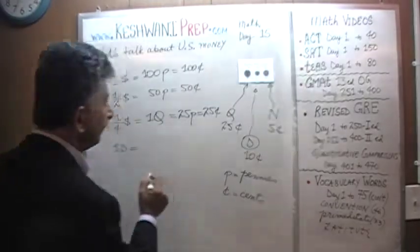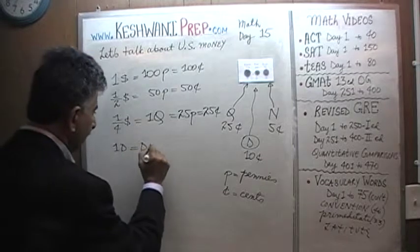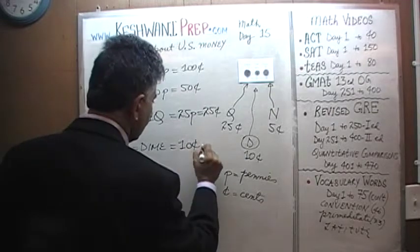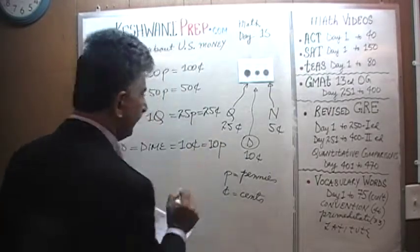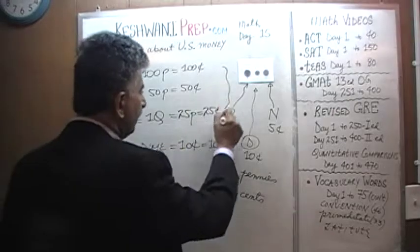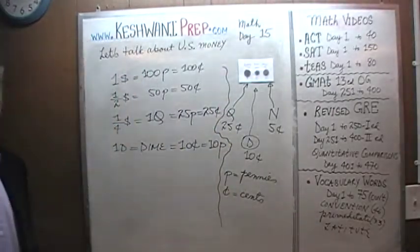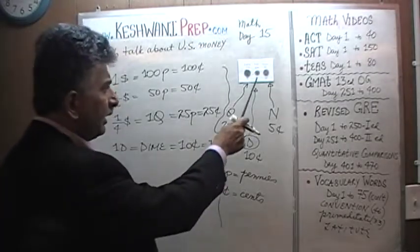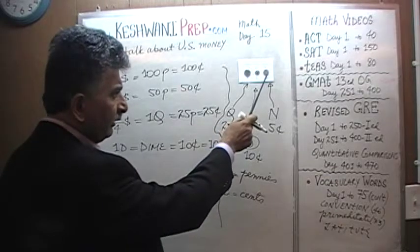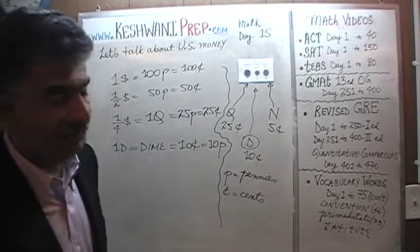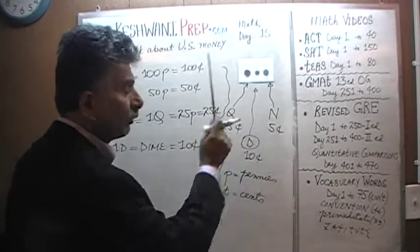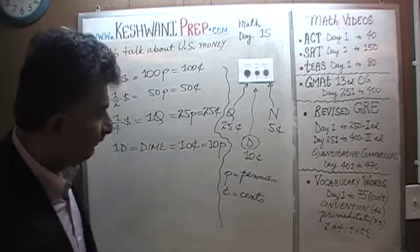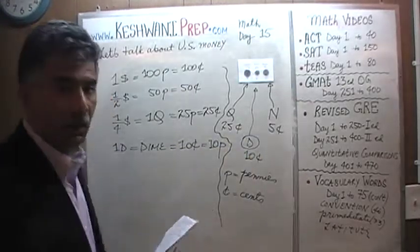Then we have one dime. One dime is 10 cents or 10 pennies. Notice the paradox: a dime, which is 10 cents, is actually smaller in size than the coin worth five cents. The smaller coin is worth 10 cents and is called the dime; the bigger coin worth five cents is called a nickel.